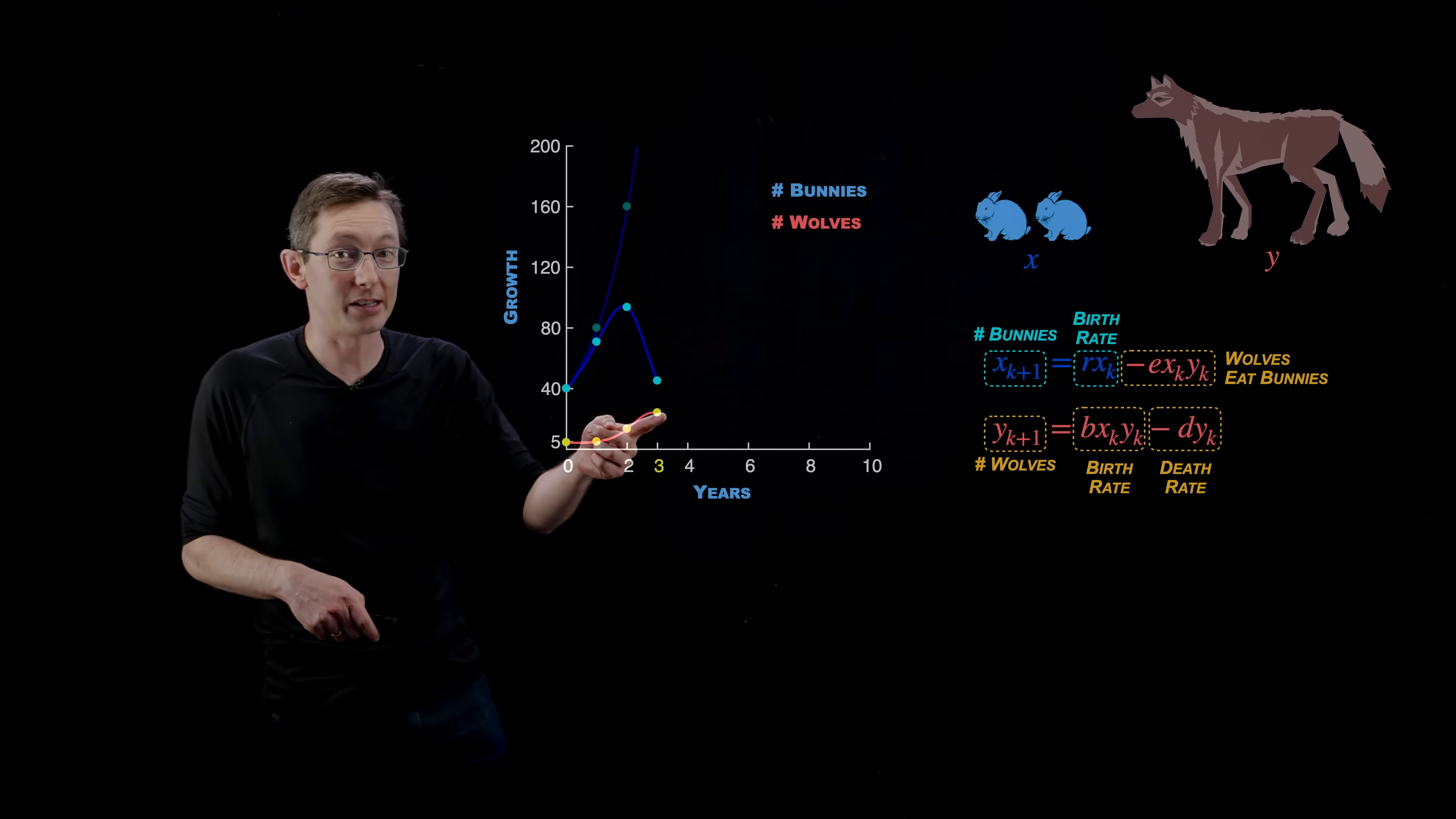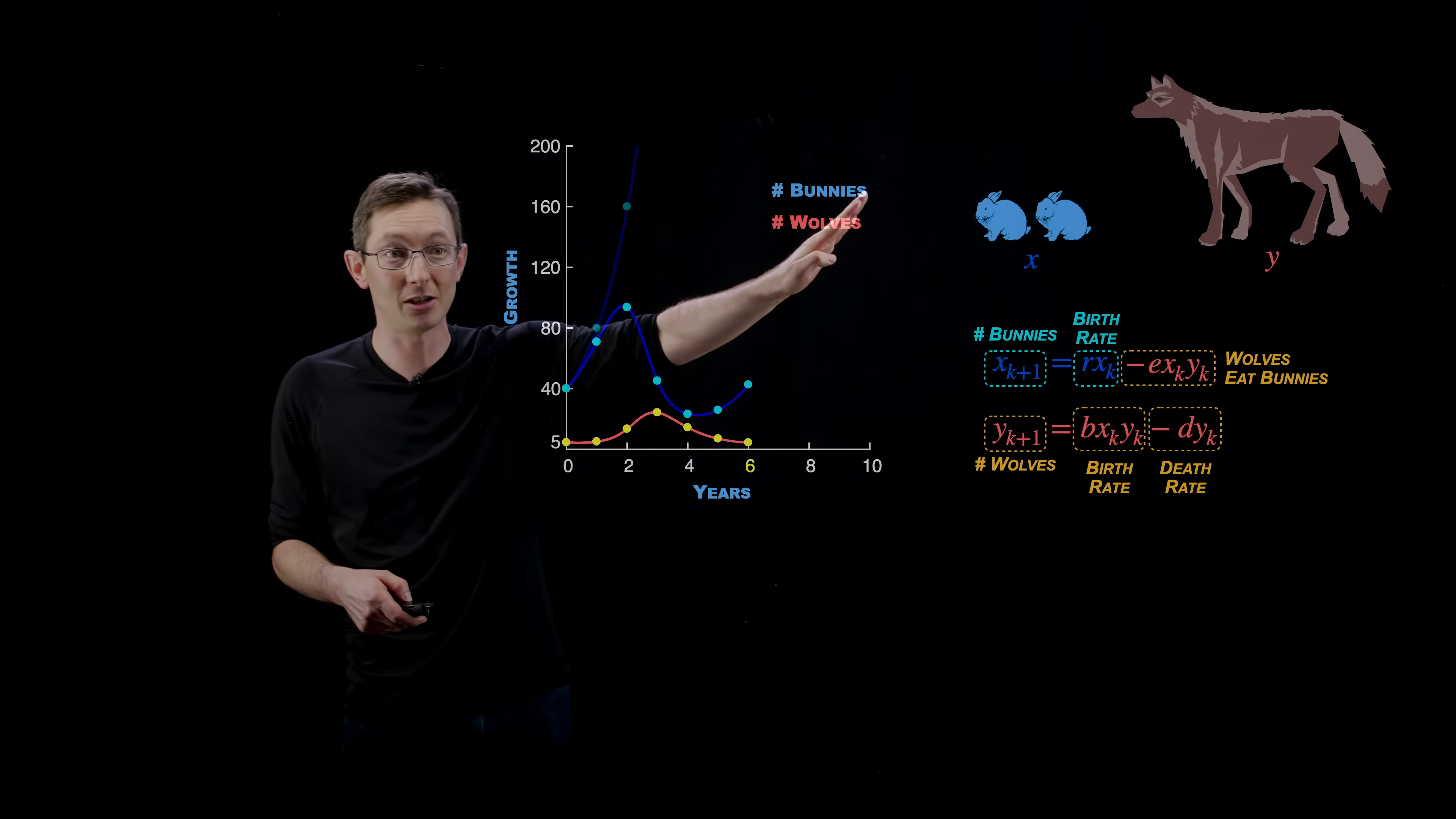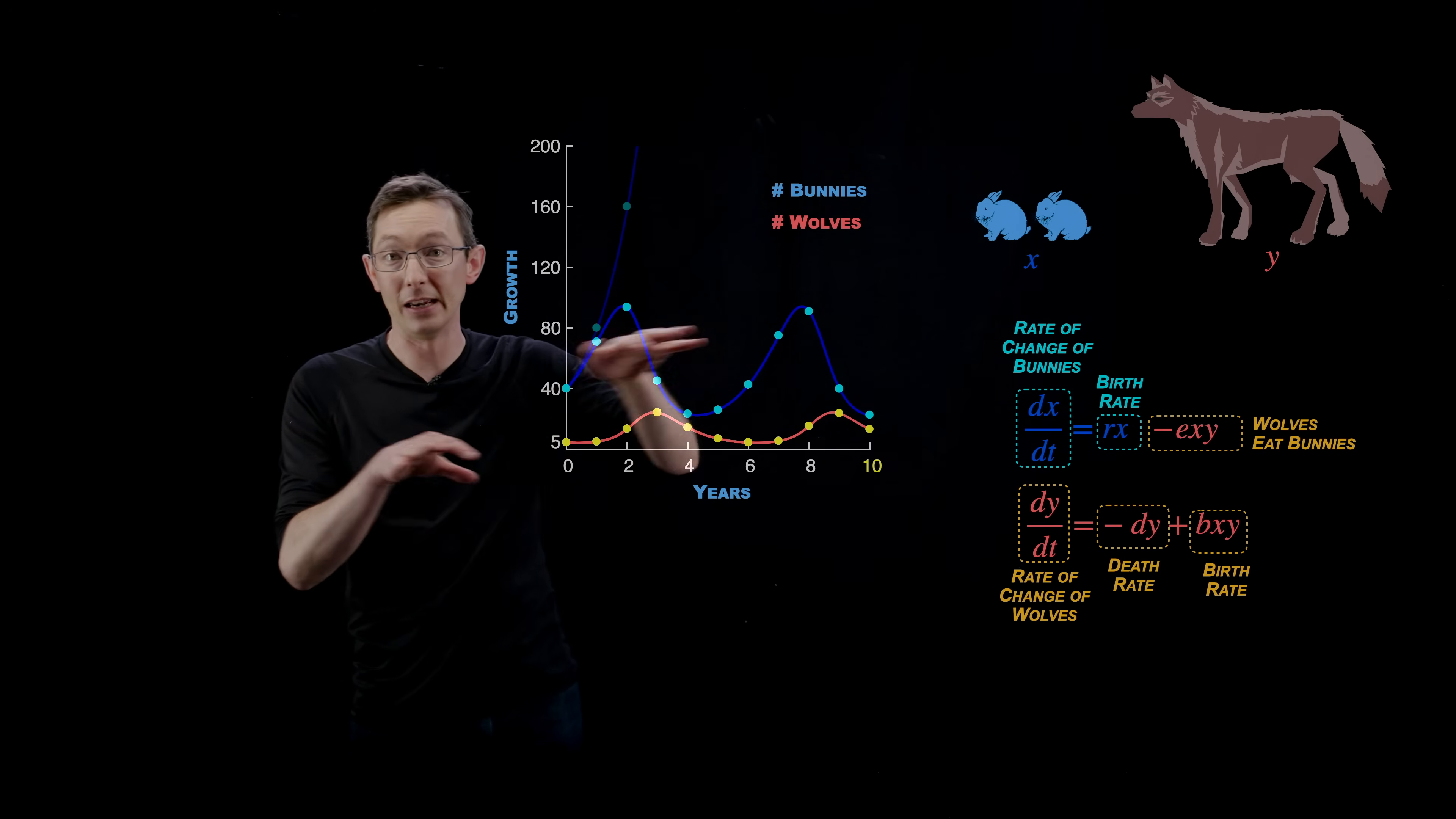Now a lot of these wolves are going to starve because there's not enough bunnies. So now the wolves are starting to go down. There's still a lot of wolves, so they're eating a lot of bunnies. But now eventually the wolf population dies off low enough that the bunnies start to go exponential again. Then they grow and grow. They hit their peak. There's a lot of wolves and so on and so forth. This repeats forever. You get this kind of oscillating ebb and flow of bunny and wolf populations where they oscillate out of phase with one another.